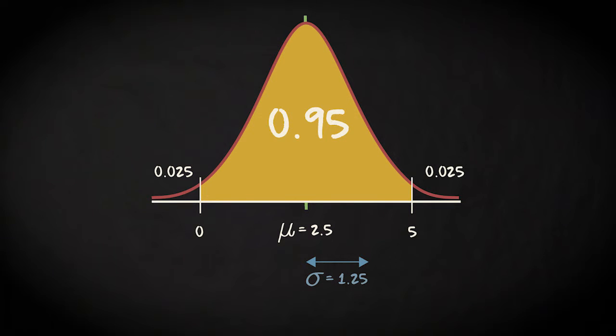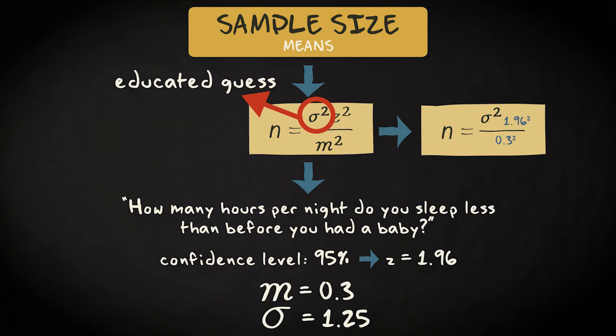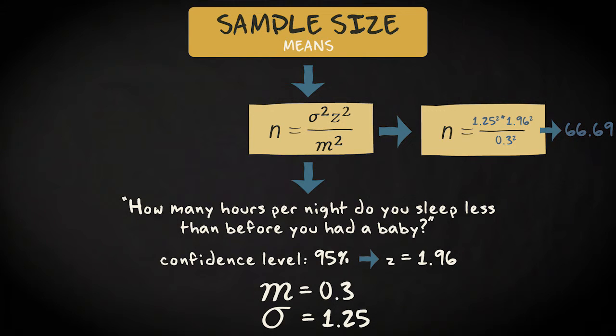After all, 95% falls within about 2 standard deviations of the mean. 2 standard deviations equals 2.5, so 1 standard deviation equals 1.25. If we now complete the formula, this is the result: 1.25 squared times 1.96 squared divided by 0.3 squared. That's about 66.69. We round up, and conclude that we need at least 67 respondents.